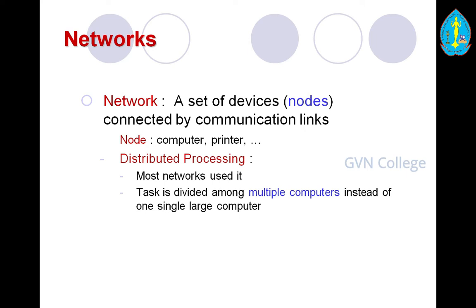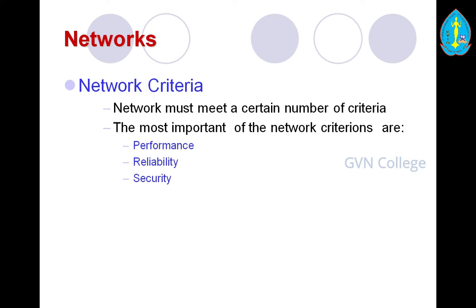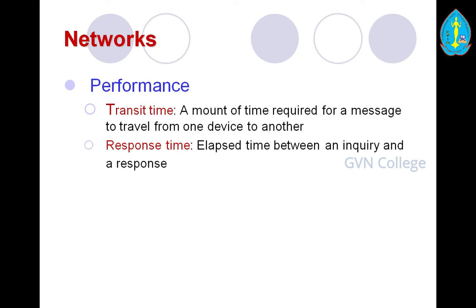Network criteria — a network must meet a certain number of criteria. The most important network criteria are performance, reliability, and security. Network performance depends on transmitting time and response time. Transmitting time is the amount of time required for a message to travel from one device to another. Response time is the elapsed time between an inquiry and a response — the time between posting a command and the opponent acknowledging it.